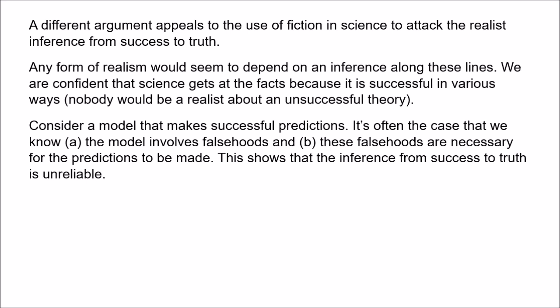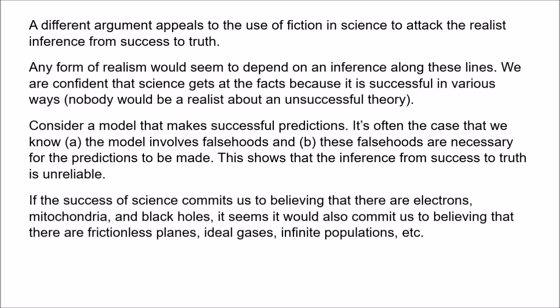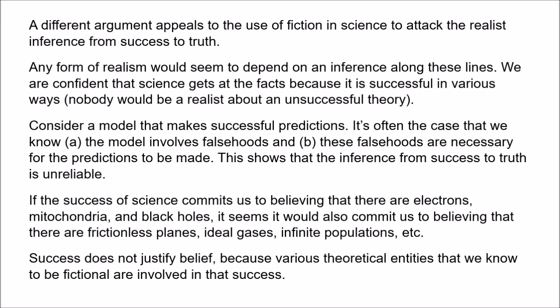A similar point is made by Stathis Silos in his article 'Living with the Abstract.' He focuses specifically on the entities described in models. Scientific models describe entities like ideal gases, frictionless planes, point masses, infinite populations, and so on — all entities that we know don't exist. Now the realist says the striking success of science commits us to believing that there really are entities like electrons, black holes, mitochondria. But precisely the same argument would seem to commit us to believing that there really are frictionless planes and ideal gases, because those entities are also involved in the success of science. If we suspend judgment about the existence of frictionless planes, why believe the rest of our theories? Why believe that there are electrons? We can no longer appeal to success to justify belief because various theoretical entities that we don't believe in are also involved in that success.